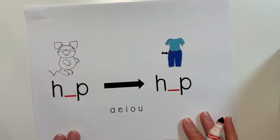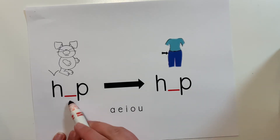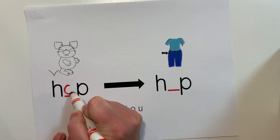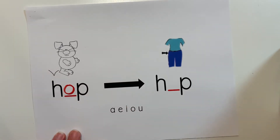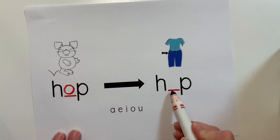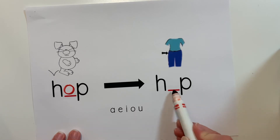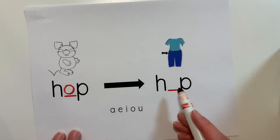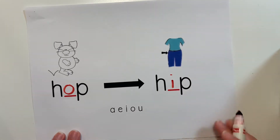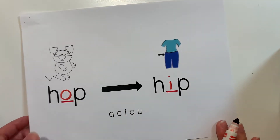What is this bunny doing? Hop — H-O-P. AH is O. I want to change that to hip — H-I-P. What is my new middle sound? I. Good job.